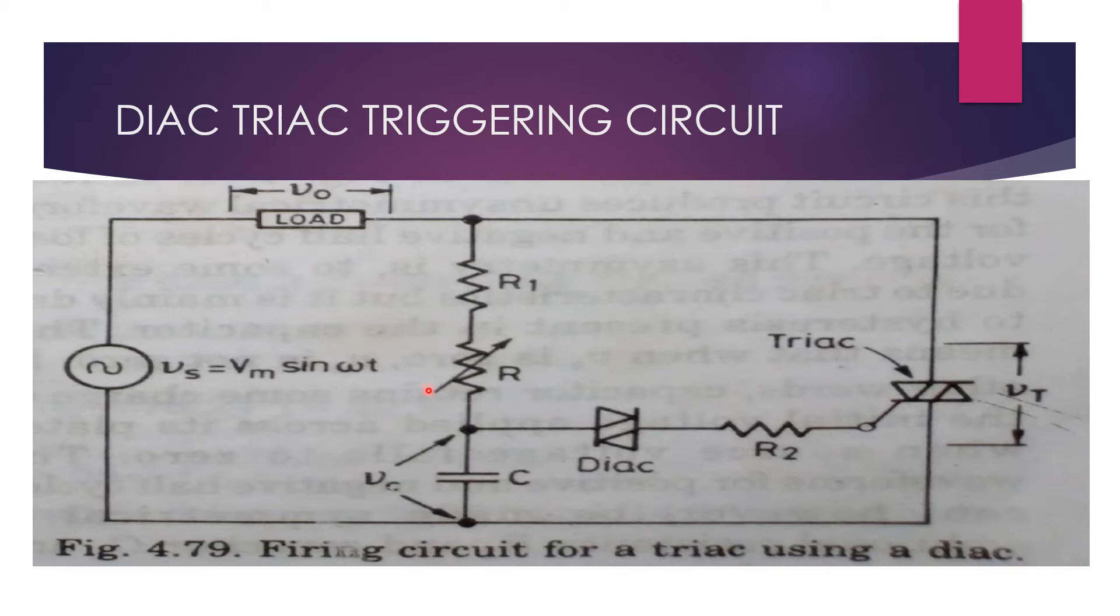In the circuit, resistor R is variable whereas resistor R1 has a constant fixed resistance.